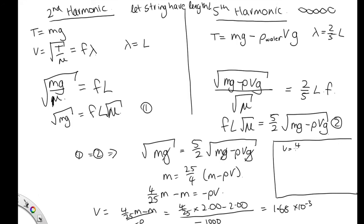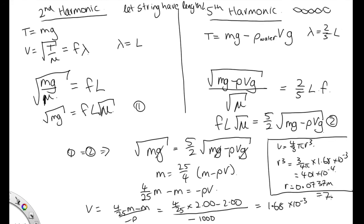So the volume is equal to 4 thirds pi r cubed. So r cubed is equal to 3 over 4 pi times 1.68 times 10 to the minus 3, which is equal to 4.01 times 10 to the minus 4. Taking the cubed root, we end up with the radius is equal to 0.0737 which is equal to 7.37 centimeters.